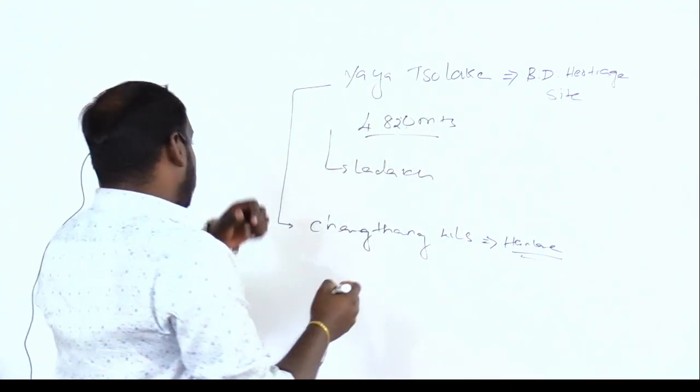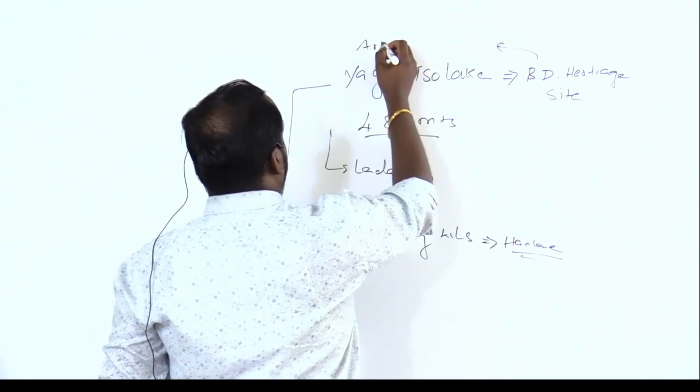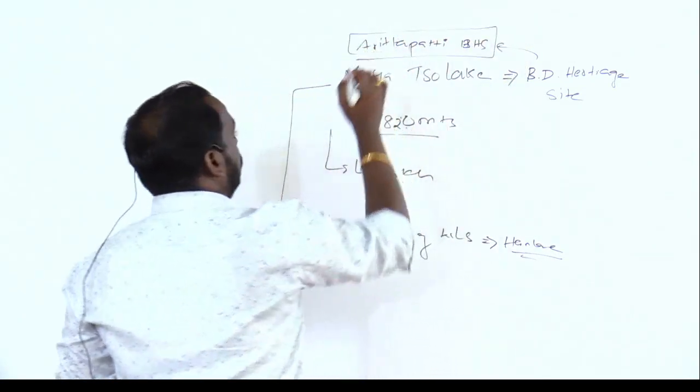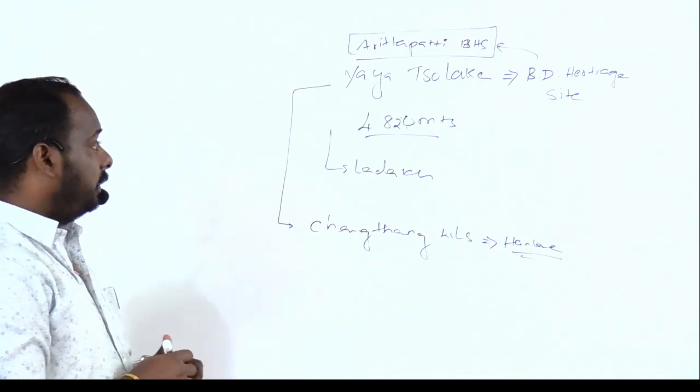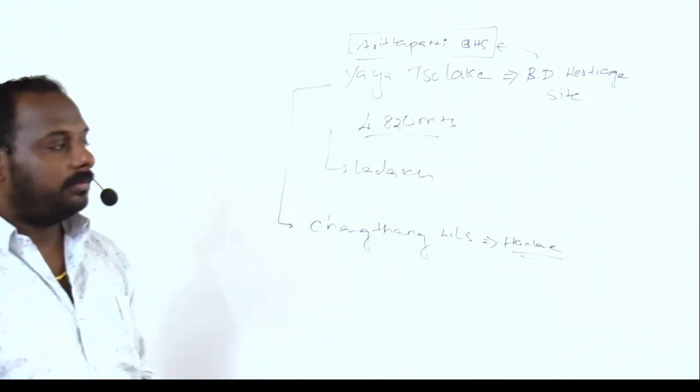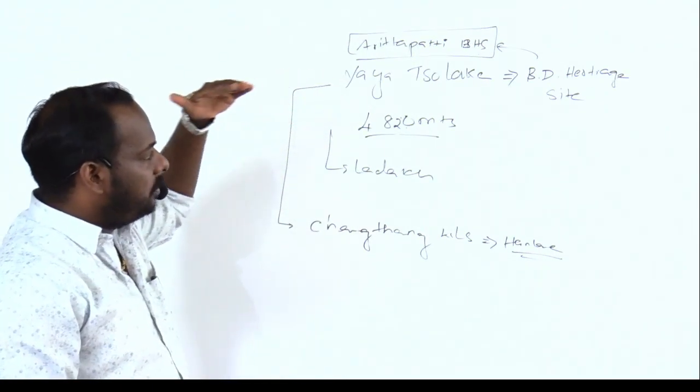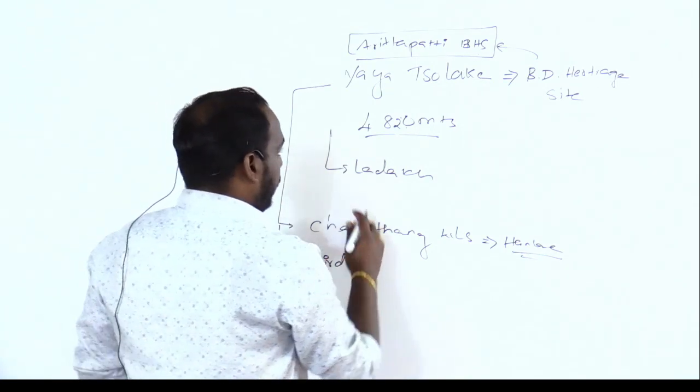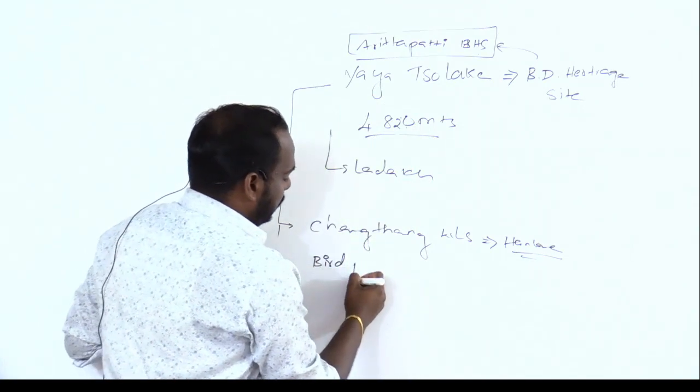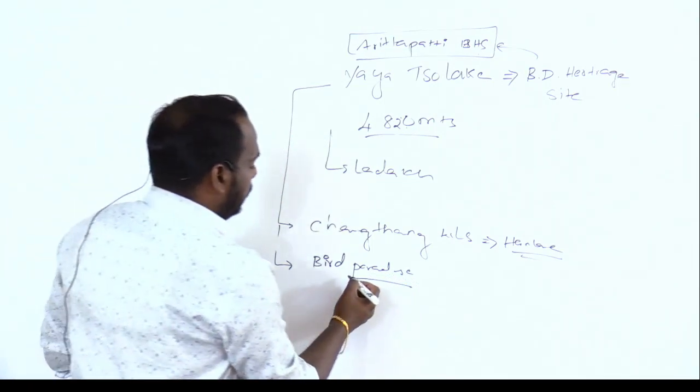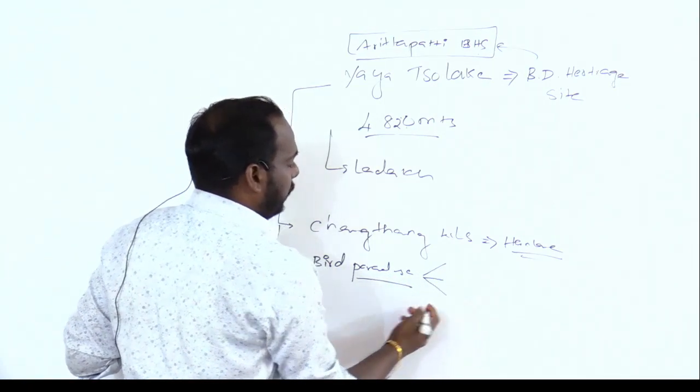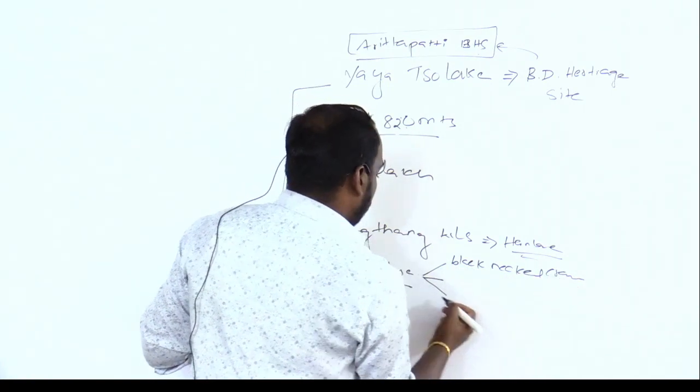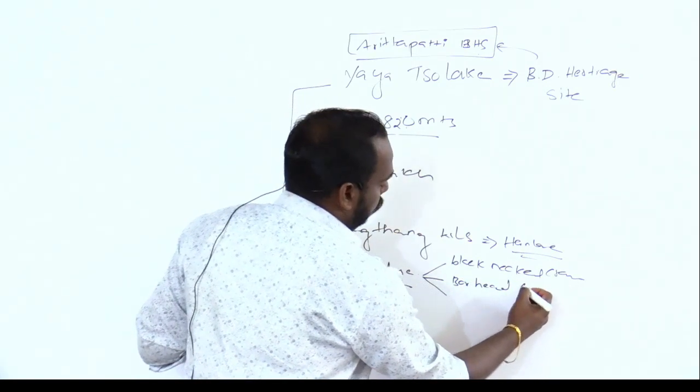Last year in September, Aritapatti became the first biodiversity heritage site in Tamil Nadu. The reason for announcing Yaya Sho Lake as a biodiversity heritage site is that it's a bird paradise. Huge birds migrate here, like the black-necked crane, bar-headed goose with vulnerable status.